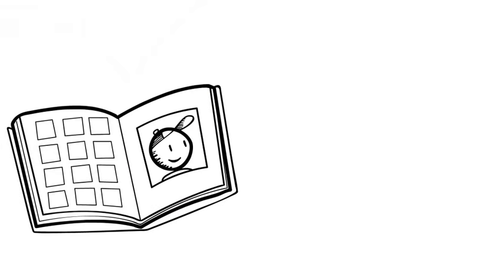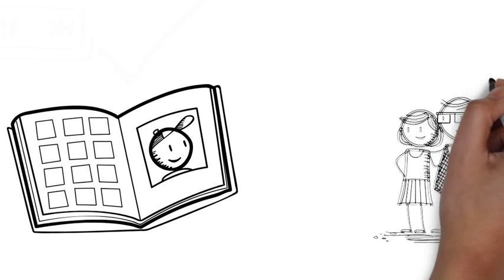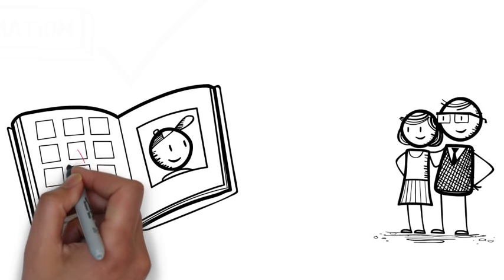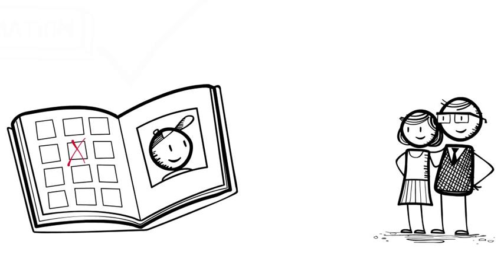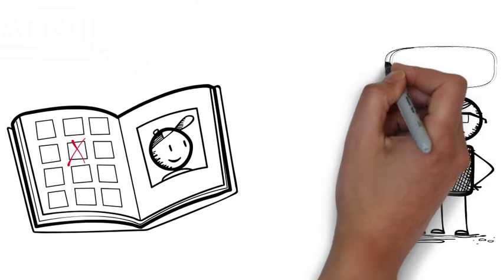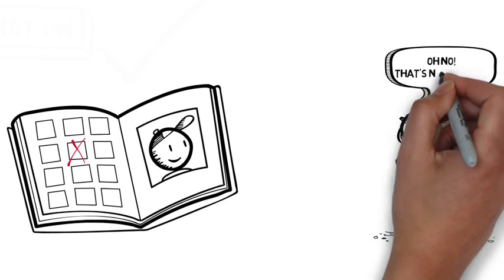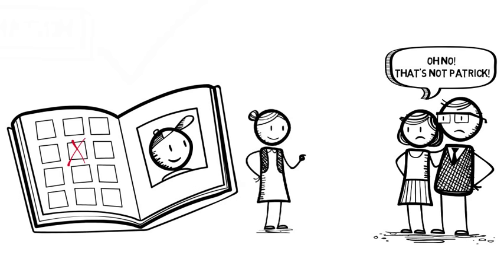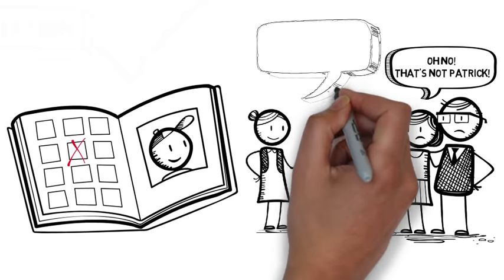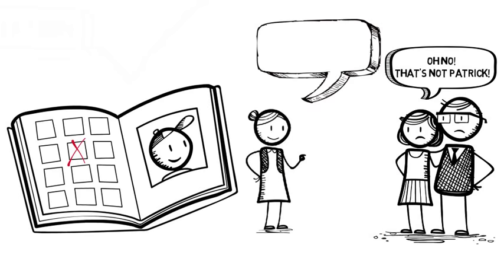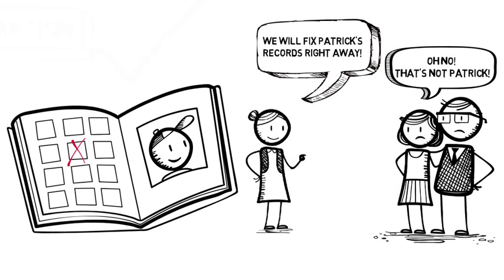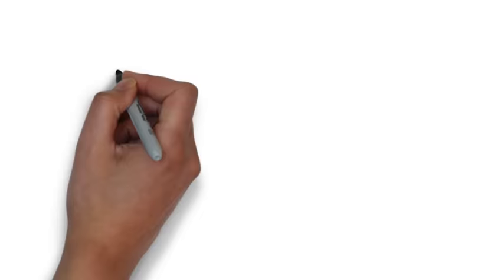FERPA also requires schools to provide Patrick's parents the ability to review his records to make sure they are accurate. Patrick's applying to college. He and his parents review his high school transcript and discover the school has gotten Patrick confused with another student who has lower grades. FERPA not only gives his parents the right to see the records, but also to request that the school correct mistakes. If Patrick's parents and the school disagree on the accuracy of the info, FERPA gives Patrick's parents the right to request a hearing.